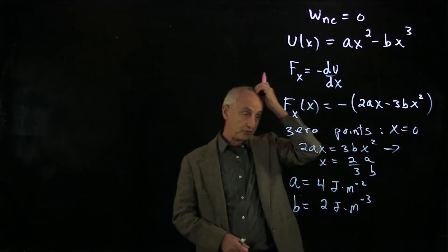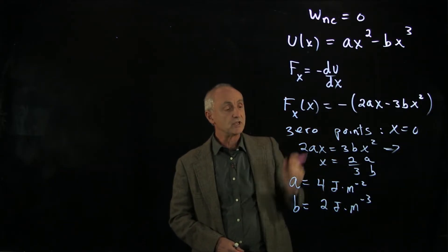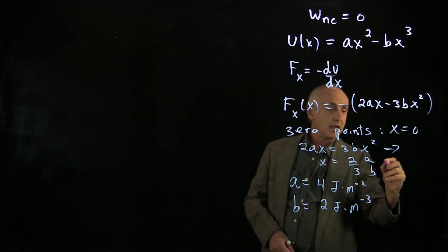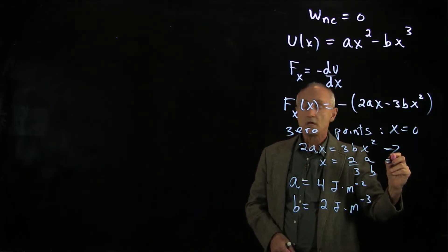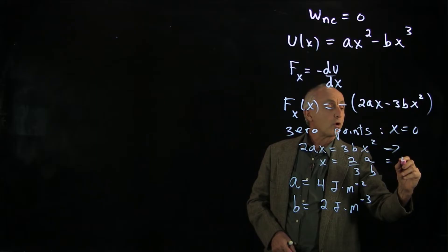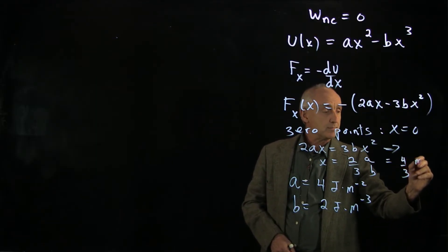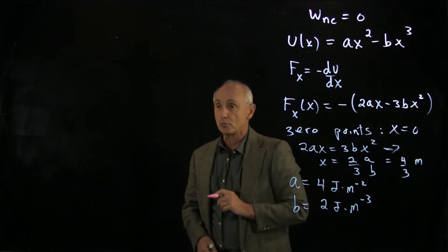If we put those numbers in, we can see that we'll get 8 over 6, which is 4 thirds. That will be in meters, where the other zero point is.